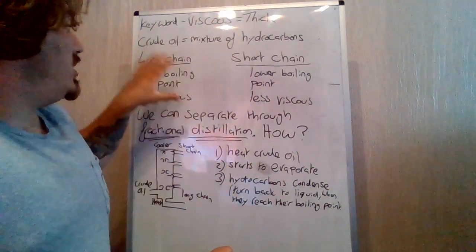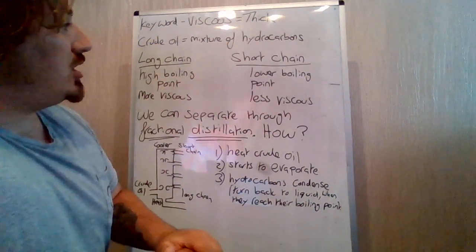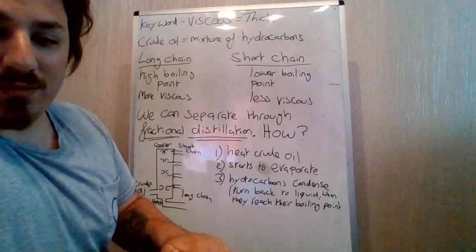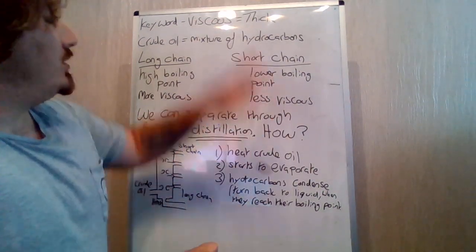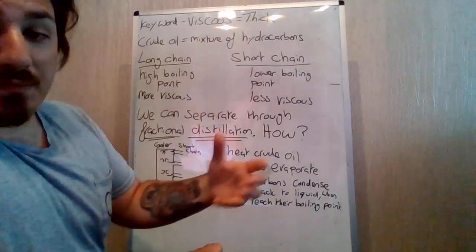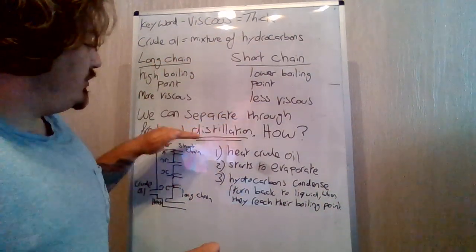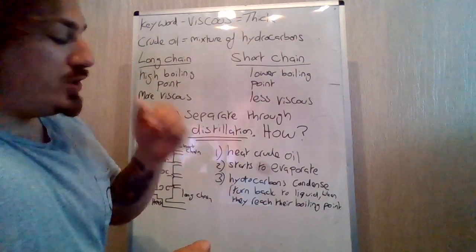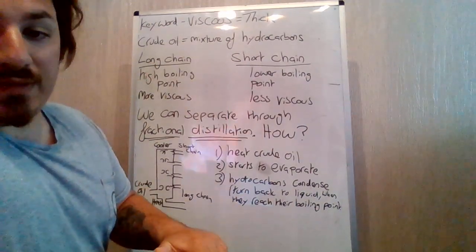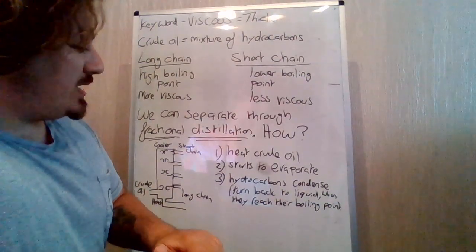And then that links in straight into this, into larger long chain hydrocarbons that have high boiling points and short chain hydrocarbons that have lower boiling points. What does viscous mean? So viscous meaning thick. Crude oil is a mixture of hydrocarbons, so they have different melting and boiling points. You have long chain, short chain. We can separate through fractional distillation, and that is using evaporation and condensation. We have to heat the crude oil, so we start those things evaporating from each other. And then hydrocarbons condense, turn back to liquid when they reach their boiling point.